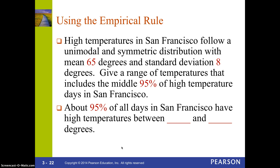We know that high temperatures in San Francisco follow a unimodal and symmetric distribution with a mean of 65 degrees and a standard deviation of 8 degrees. What's the range of temperatures that includes the middle 95% of high temperature days? 95% is the amount of data between two standard deviations below the mean and two standard deviations above the mean. So I take 65 minus two standard deviations — the standard deviation is 8 — and 65 plus two standard deviations. So 95% of all days in San Francisco have high temperatures between 49 and 81 degrees.